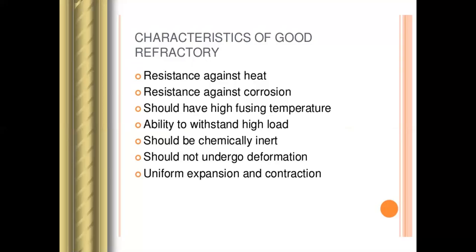The fusion temperature should be high in the case of refractory materials — whether acidic, basic, neutral, or different types. They should have a high fusion temperature. Fusion means combining. All these refractories should be chemically inert, meaning they are stable. They should be stable towards acids, chemical substances, basic substances, alkaline substances — whatever chemical substances are on the surface. They should not undergo any chemical reactions with these substances. Refractory materials should be chemically inert and chemically stable.